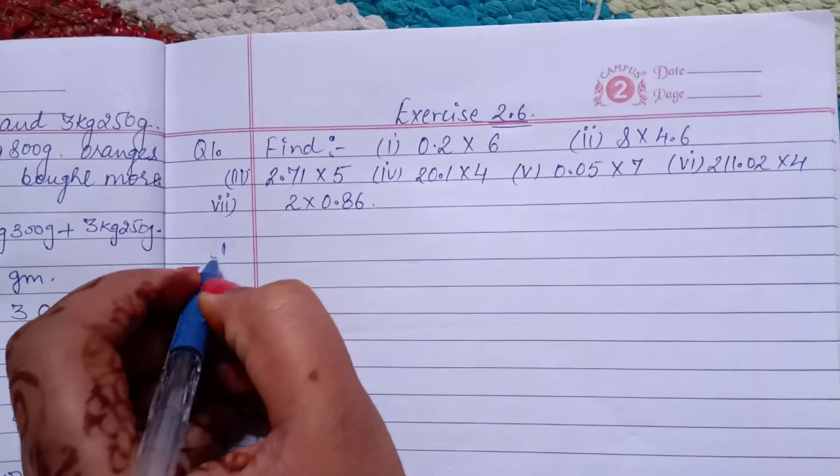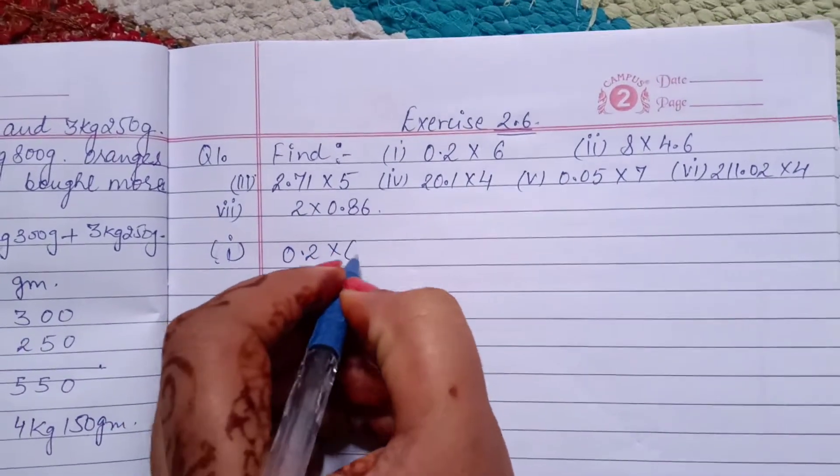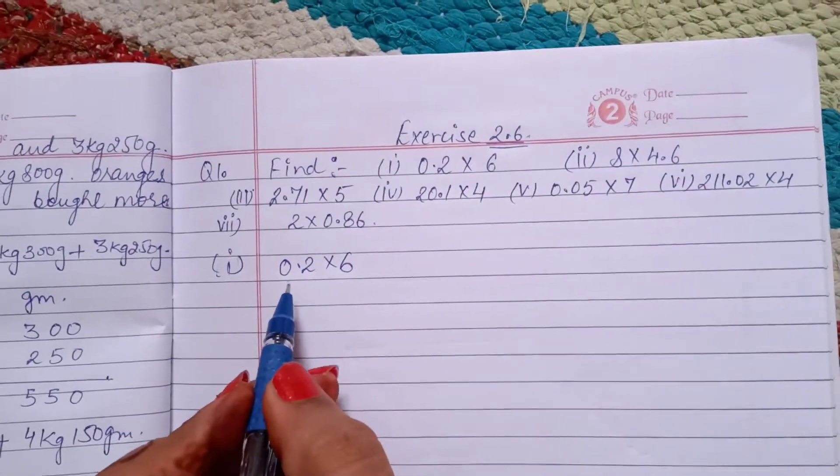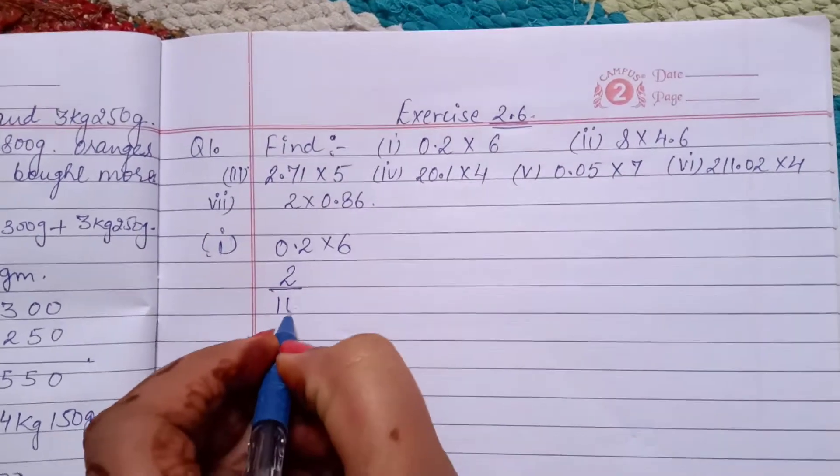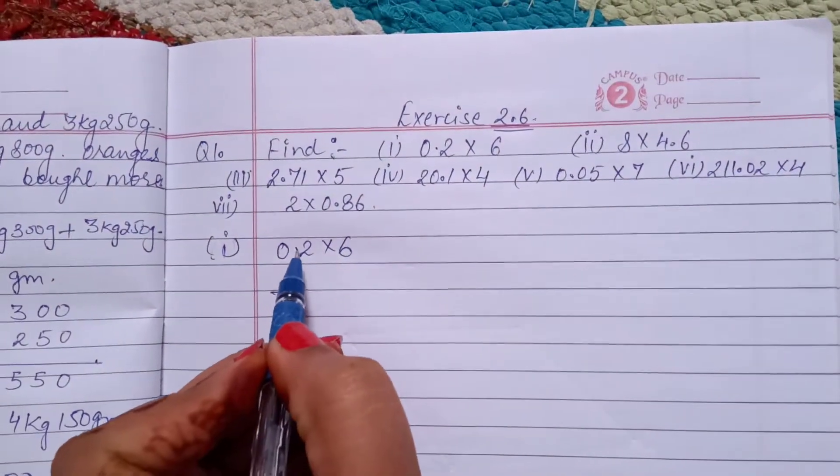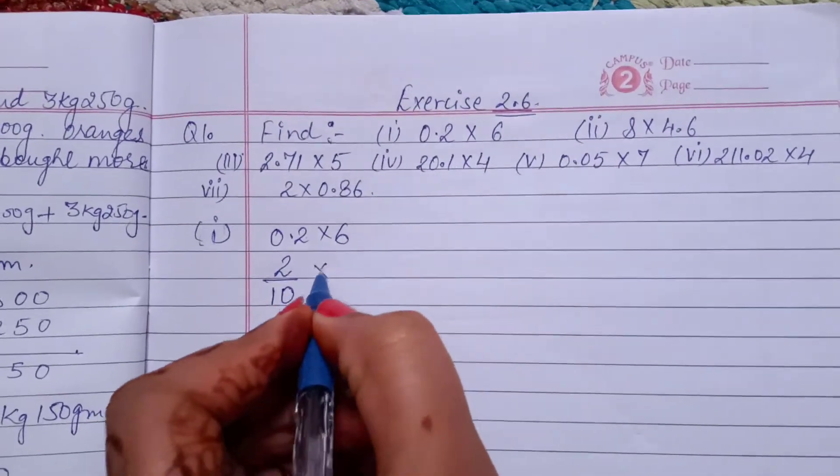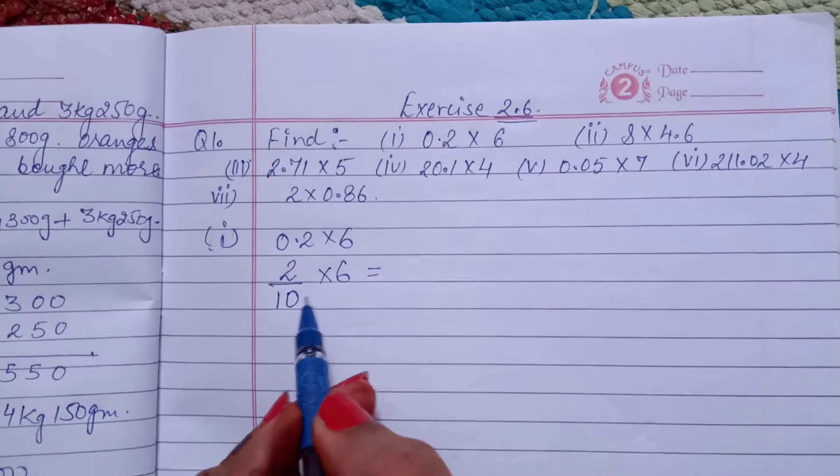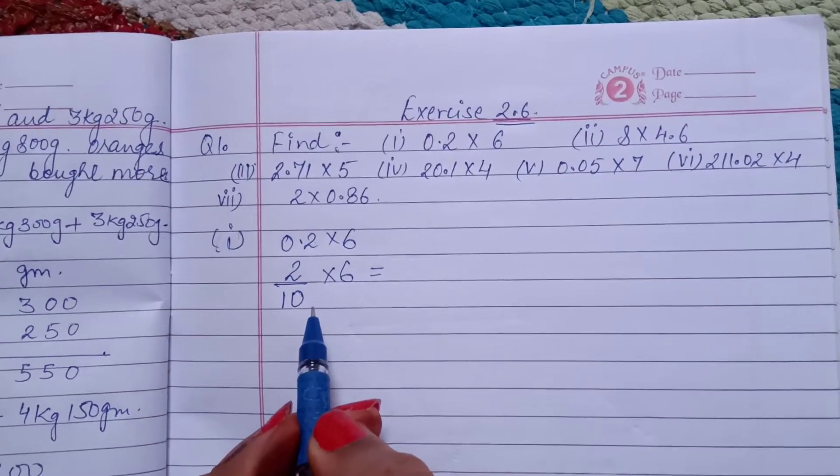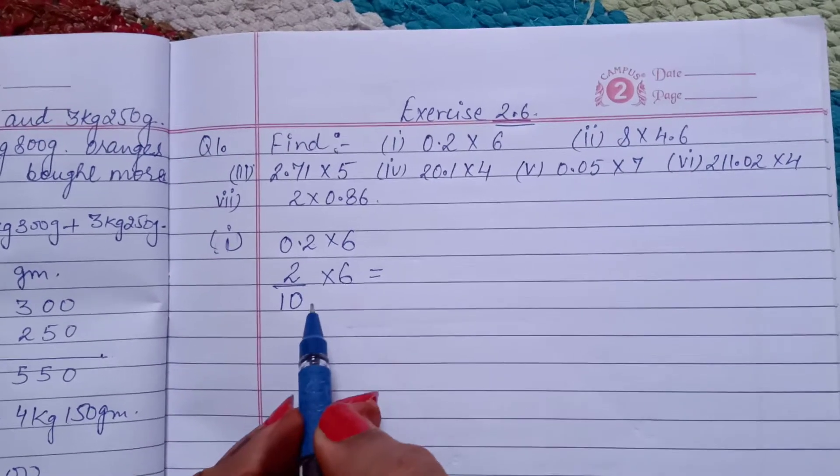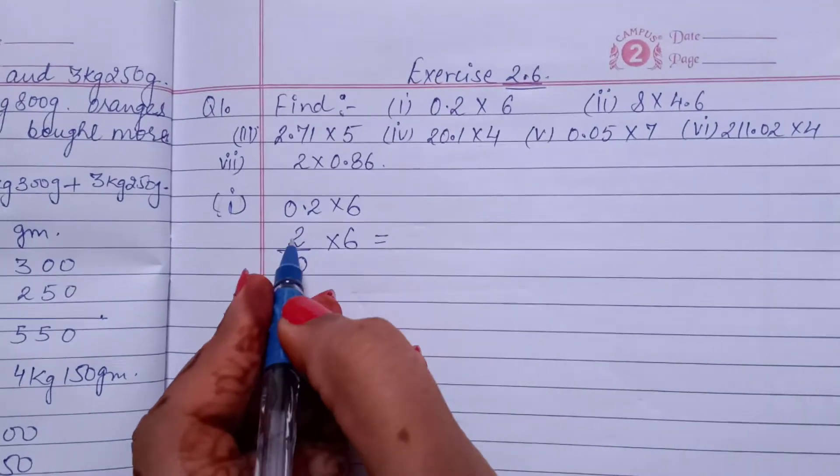First part is 0.2 multiply by 6. First we remove this decimal with the help of over 10, because after decimal only one digit, that's why we put over 10 into 6. Now here no need to cut these numbers, because if we do cutting, then our calculation will be complicated.